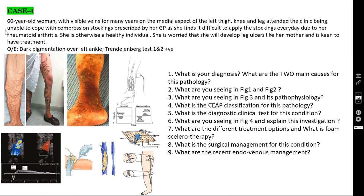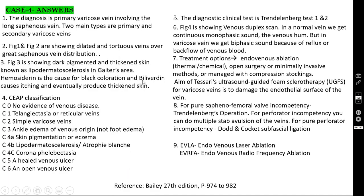Case number 4: a 60-year-old woman with visible veins for many years on the medial aspect of the left thigh, knee, and leg attended the clinic. She is unable to cope with compression stockings prescribed by her GP because she finds it difficult to apply them daily due to her rheumatoid arthritis. She is otherwise healthy, and is worried about developing leg ulcers like her mother. On examination, there is dark pigmentation over the left ankle, and the Trendelenburg test 1 and 2 are both positive.